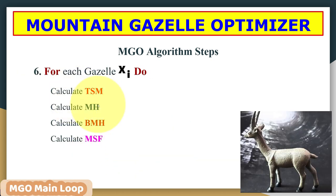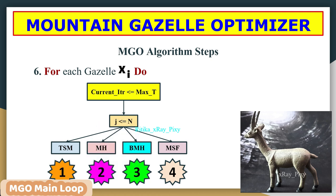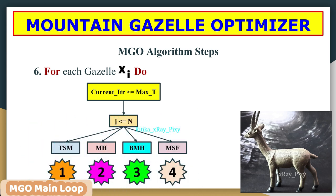After that, we update locations using different mathematical models. In this algorithm, the global best solution is represented by the adult male gazelle. Each gazelle is assigned to a herd: territorial solitary males, maternity herd, bachelor males herd, or migration for food sources. Around one third of the search population is estimated to have the lowest cost.